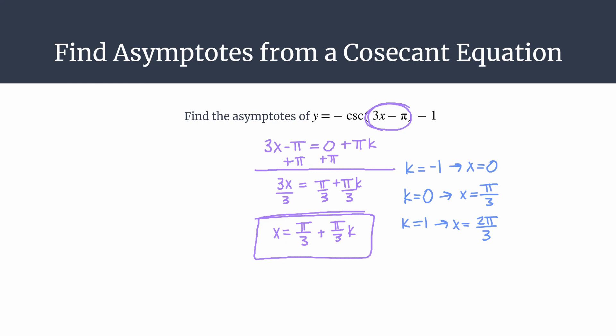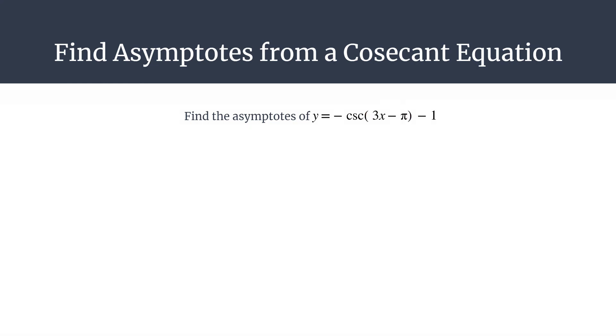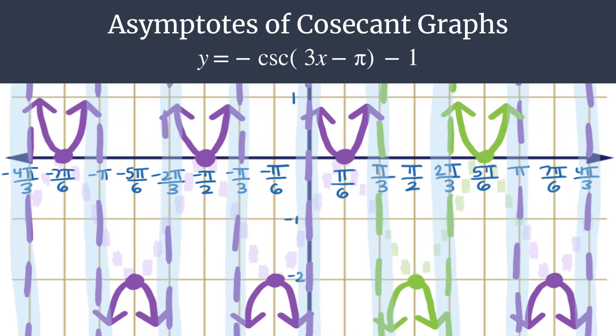Now let's go ahead and look at the graph so we can confirm this and maybe see how a few more would be generated. So here's the graph. Here is our asymptote generating equation. Notice that the three asymptotes that we found on the previous screen, x equals 0, x equals pi over 3, x equals 2 pi over 3, they're all here.